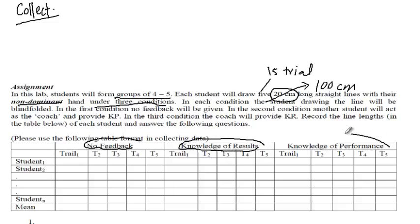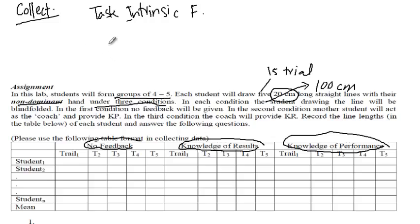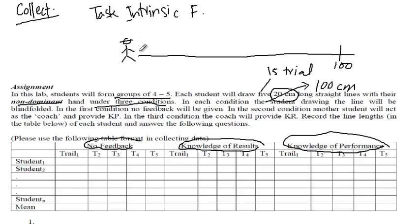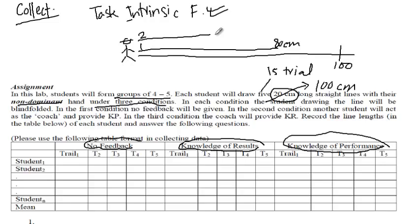Let's start with the no feedback situation, which highlights task intrinsic feedback. The first participant is blindfolded so they cannot see. They have a coin in their hand and the ruler is laid in front of them on the table. The target is set to 100 centimeters. They slide the coin and in trial number one may end up at position 80 centimeters. Before moving on to trial two, they open their eyes and see where their position is — that's how they get the intrinsic feedback. Then they do trial two and maybe end up at 85.